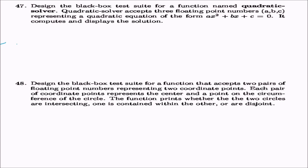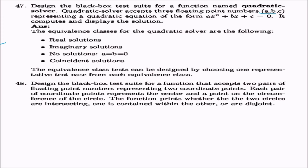Design a black box test suite for a quadratic solver function that accepts three floats a, b, c representing ax² + bx + c = 0. The equivalence classes are: real solutions, imaginary solutions, no solution (when a and b equal 0), and coincident solutions. Equivalence class tests are designed by choosing one representative test case for each class.